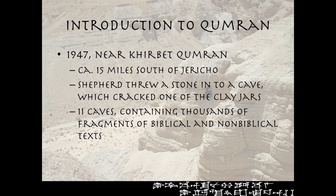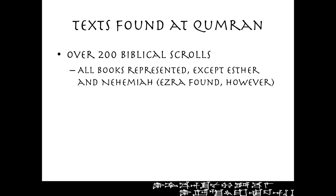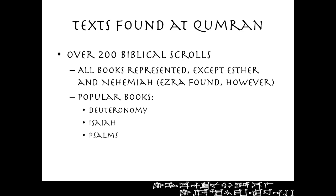In total there were 11 caves containing thousands of fragments of biblical and non-biblical texts. Over 200 biblical scrolls were found, and all books of the Hebrew Bible/Old Testament are represented except for Esther and Nehemiah. However, since Ezra and Nehemiah were one book and Ezra was found, it's possible Nehemiah was represented as well, just not preserved. The most popular books found at Qumran are Deuteronomy, Isaiah, and the Psalms, and to a lesser extent Genesis and Exodus.